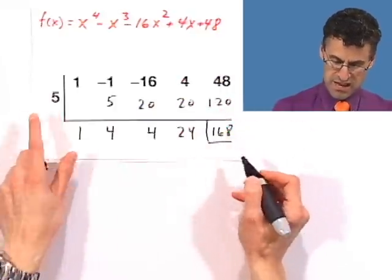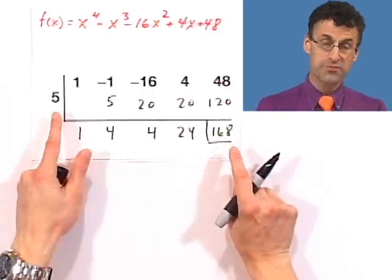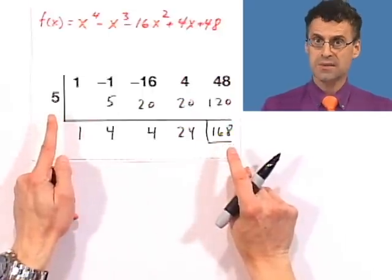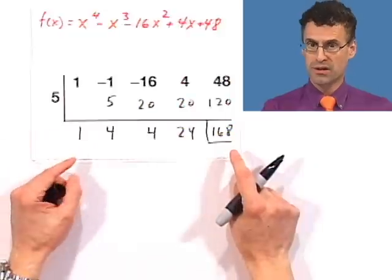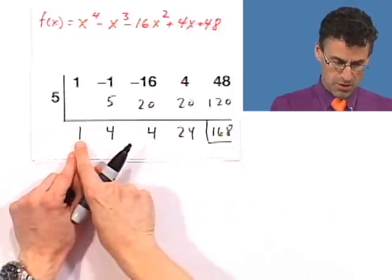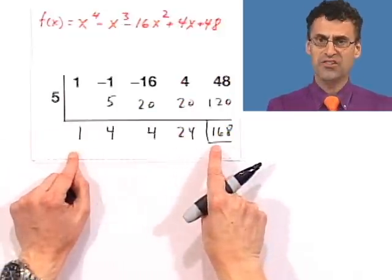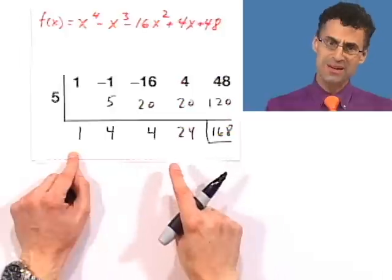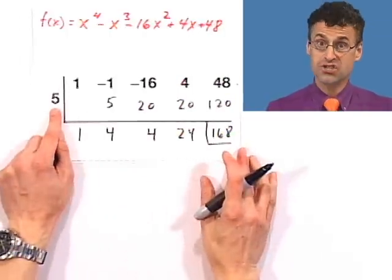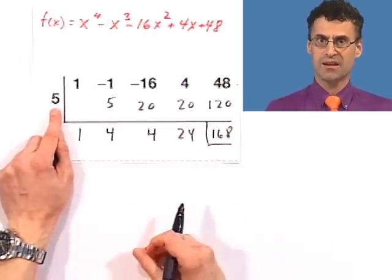Again, that's the remainder. Notice that that is not 0. So therefore, 5 is not a zero or a root of this polynomial. But notice that all the signs are positive. That means that this number is larger, is larger than all the zeros.